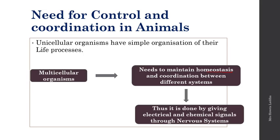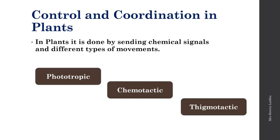In this chapter we will discuss the nervous system. Control and coordination in plants is done by chemical signals and different types of movements. For example, phototropic movement is the movement towards sunlight — 'photo' means light, so if a plant is moving towards the sunlight it is termed as phototropic.